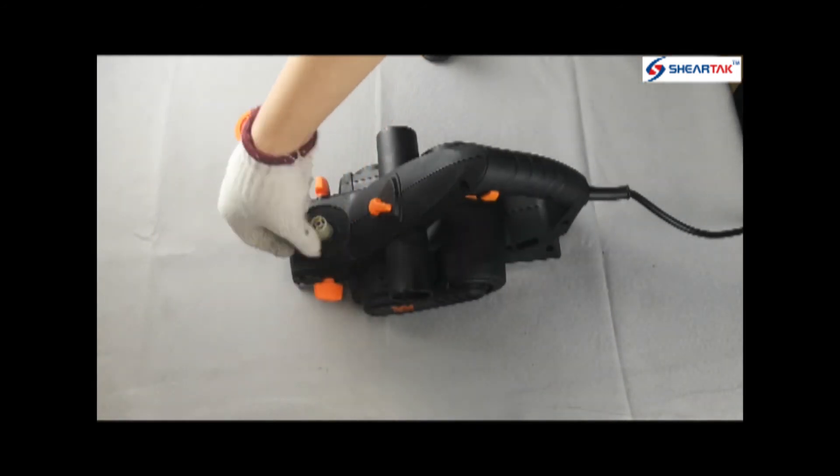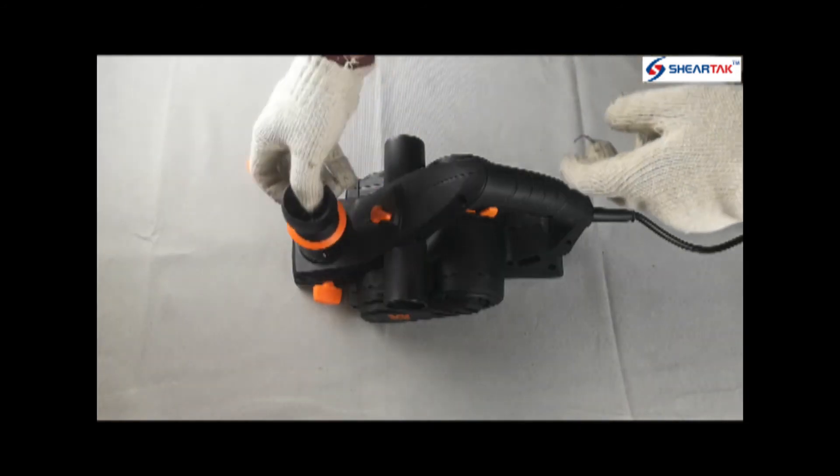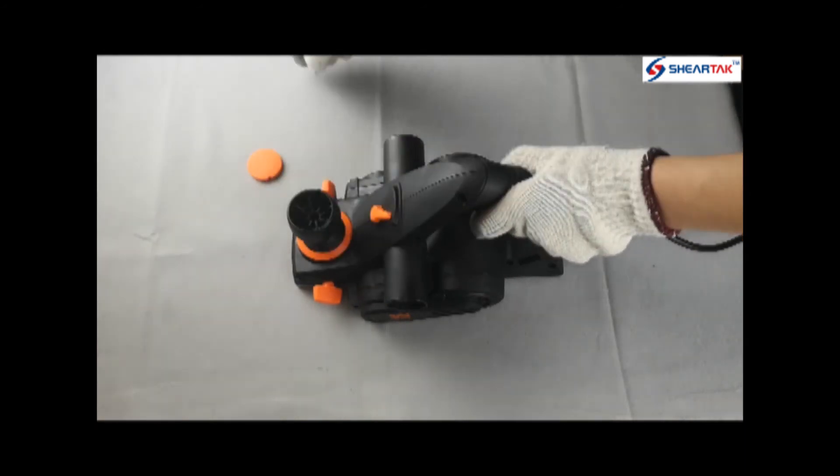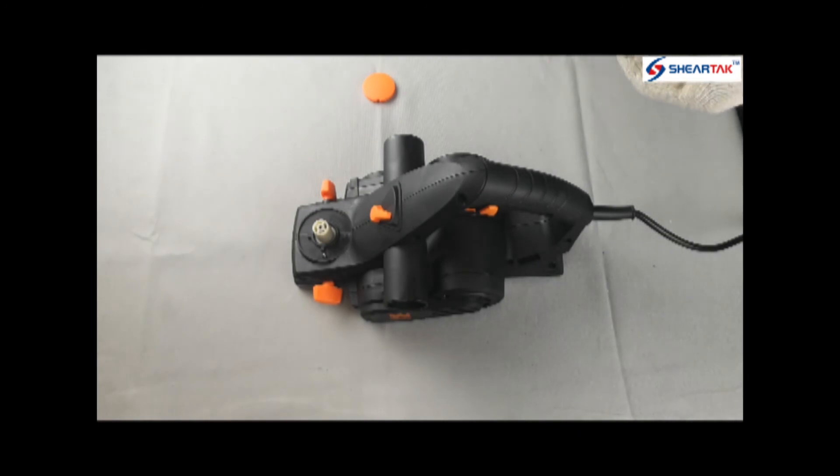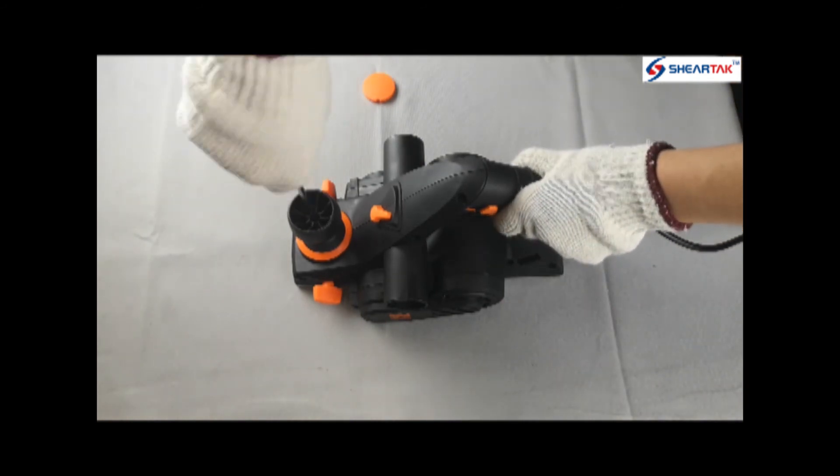Place the spring and the ball in the slot. Place the adjust knob back. Tighten it up. Insert the cover.